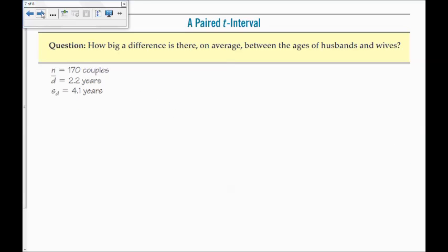So, here is an example. How big of a difference is there on average between the ages of husbands and wives? And I've kind of put in here the data that we need. Confidence intervals have four steps. You check the conditions, you state what interval you're doing, you then find the interval and give the conclusion in context. Since I don't want to copy more of the information here, I'm just going to assume that it is from a random sample, and because our n is very large, I can go ahead and use a paired t-interval.